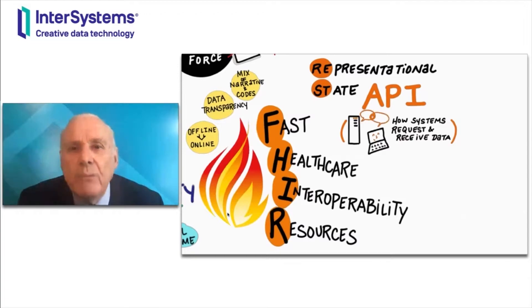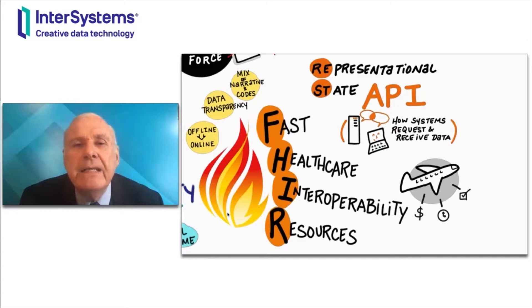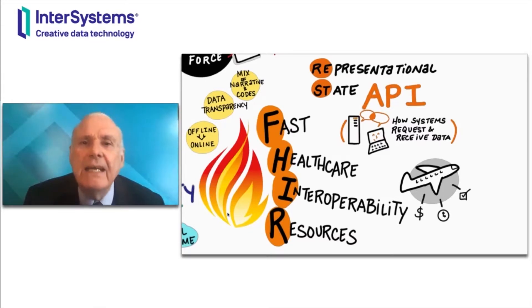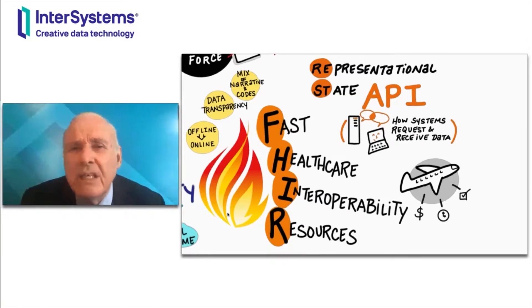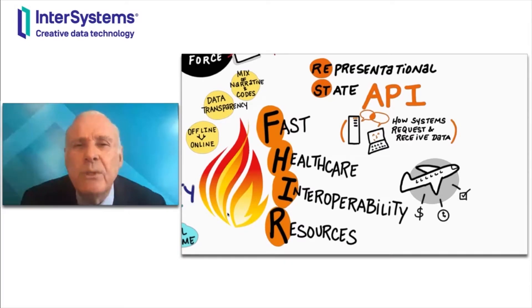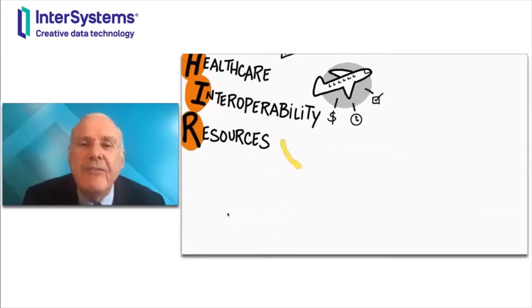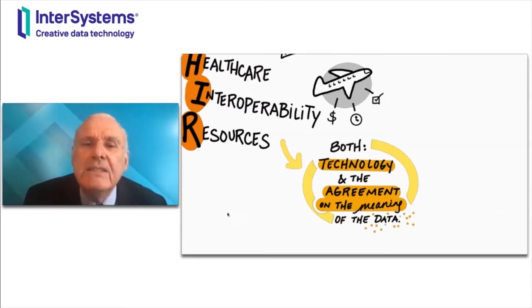FHIR is in its essence a representational state API. It is a specification for how one system asks another system for data and what it gets back in return. My analogy for this that most can understand is travel websites. If you go to your favorite travel website and say you want to go from Boston to New York on November 15th, you quickly see a list of flights from different airlines. That's not because your favorite travel website has downloaded all the airline schedules. It's because the airlines have agreed on how to represent the data in an airline flight, how to ask for it, and what you get back in return. And FHIR is the same thing for healthcare — the same technology and the agreement on the meaning of the data in healthcare.